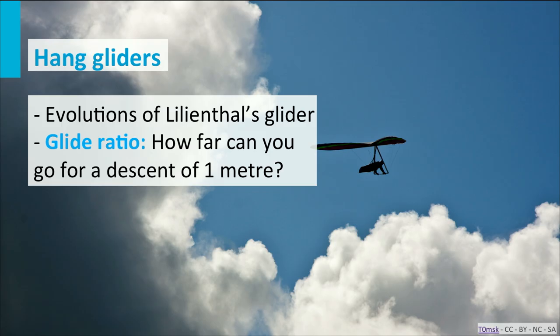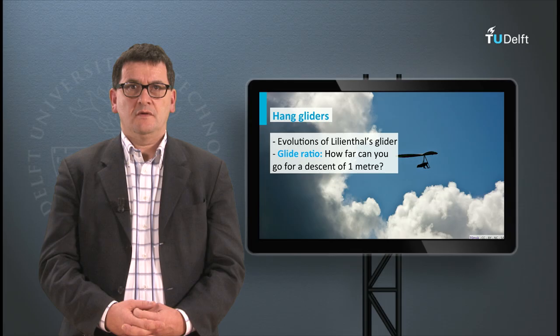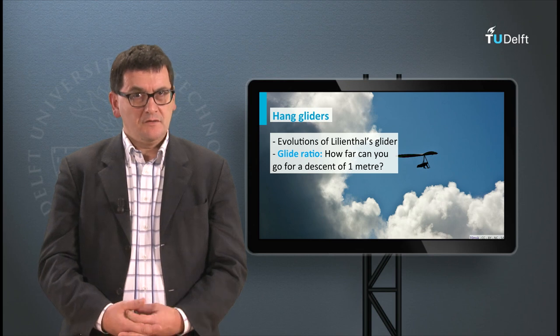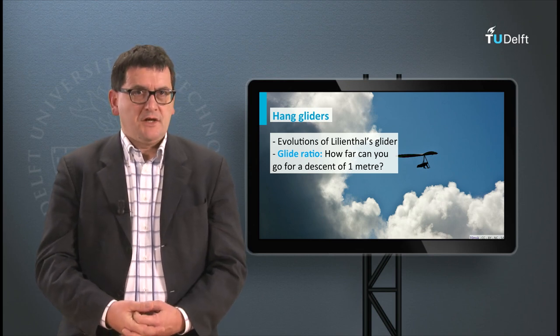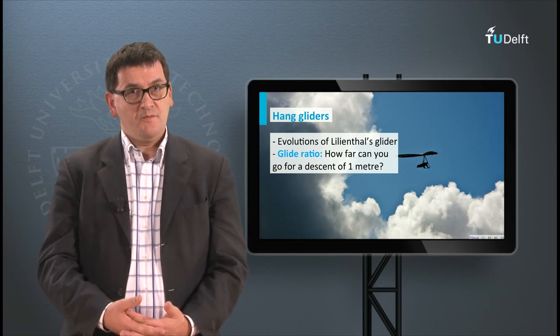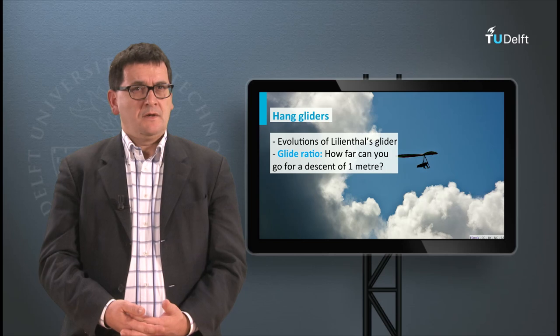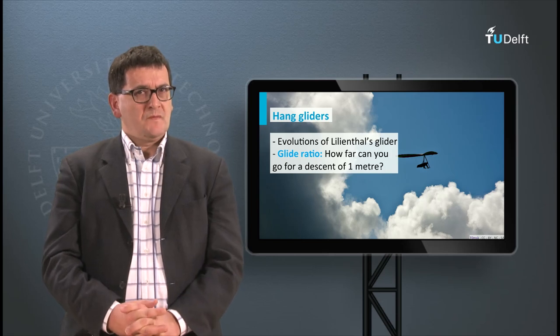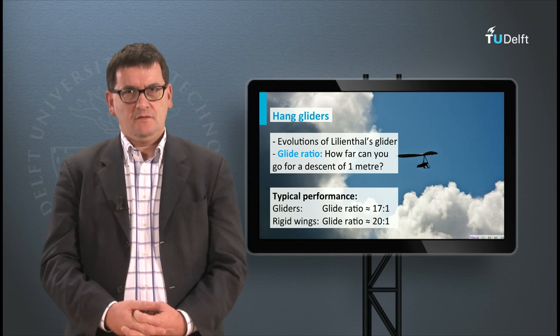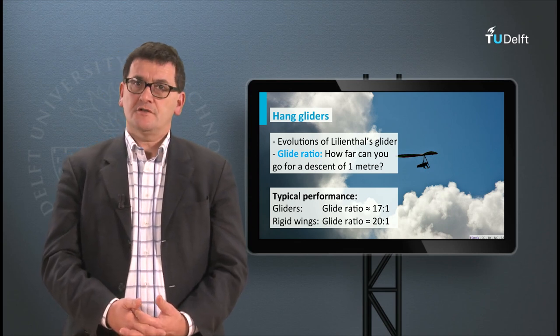Far descendants of Otto Lilienthal's gliders are today's hang gliders. These hang gliders fly from high ground and try to pick up thermals to stay in the air as long as possible. What is a common glide ratio for a hang glider? Note that the glide ratio is the ratio of the horizontal distance traveled for a descent of 1 meter. For common hang gliders this might be 17 to 1, whereas for gliders with a fixed wing this might be 20 to 1.